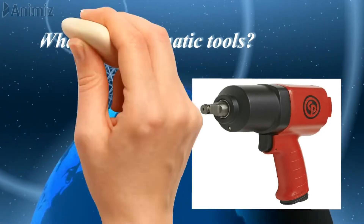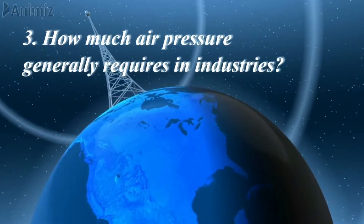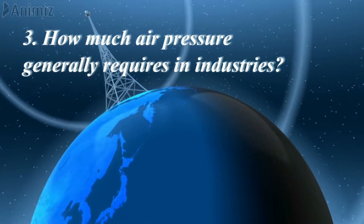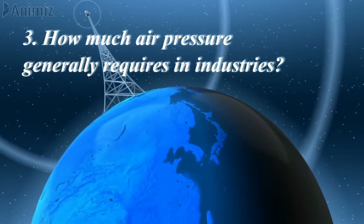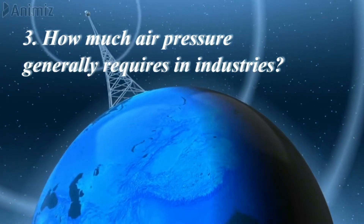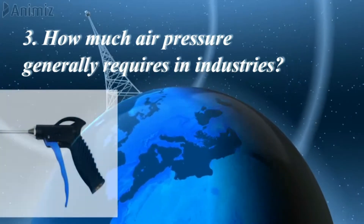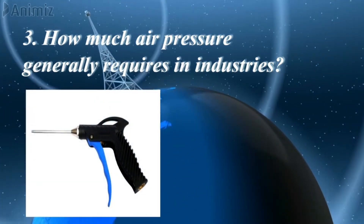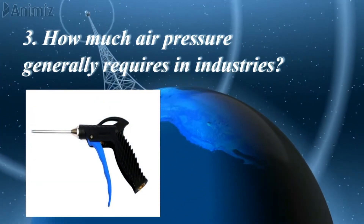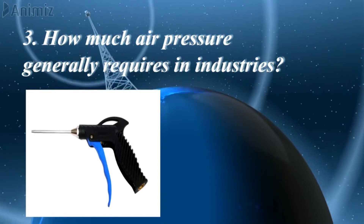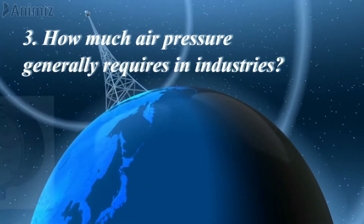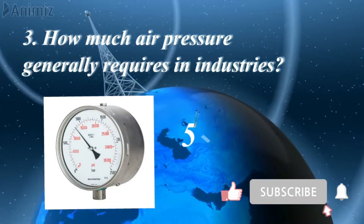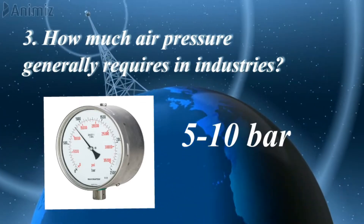Third question: how much air pressure is generally required in industry? In manufacturing industry, the application of compressed air is very common. Generally, the pressure range of compressed air in industries is 5 to 10 bar.